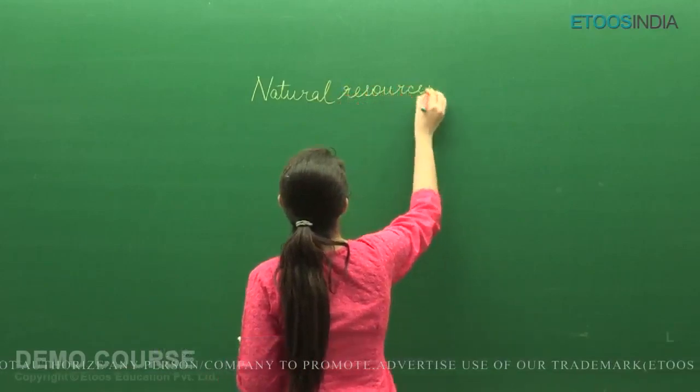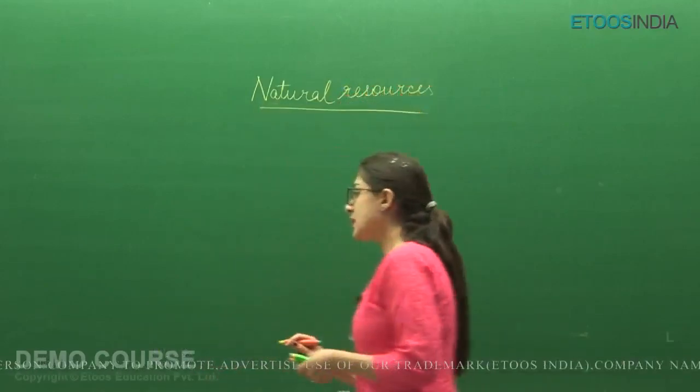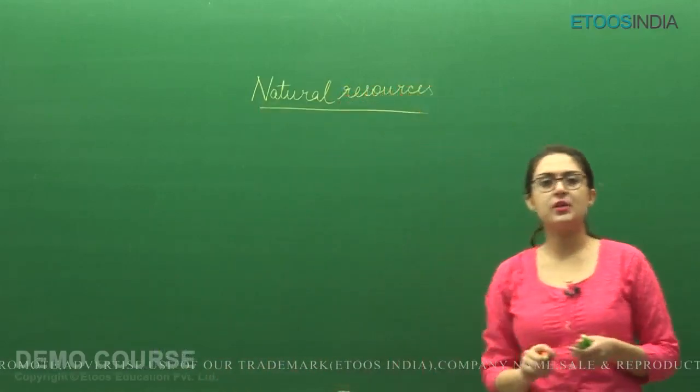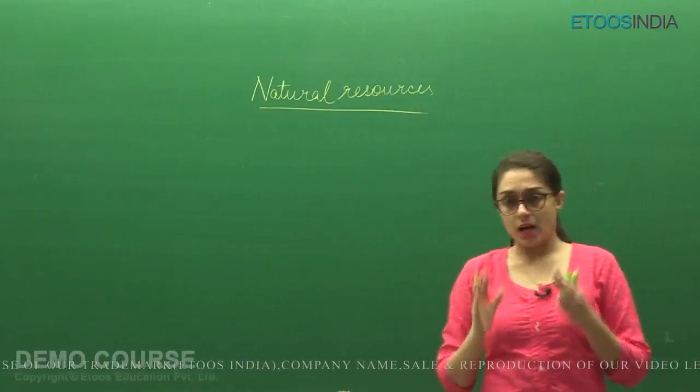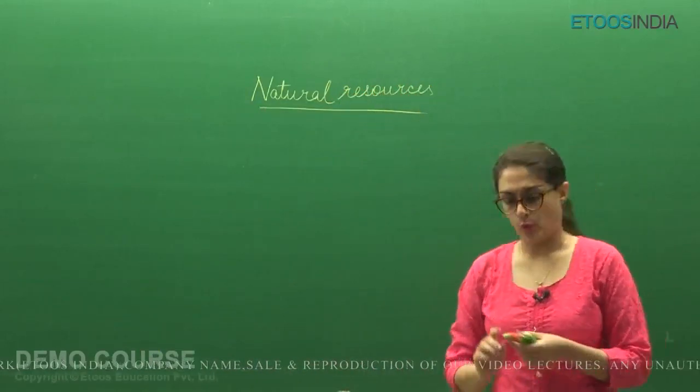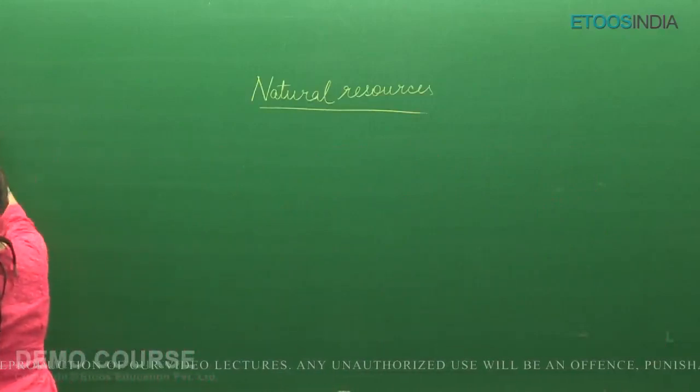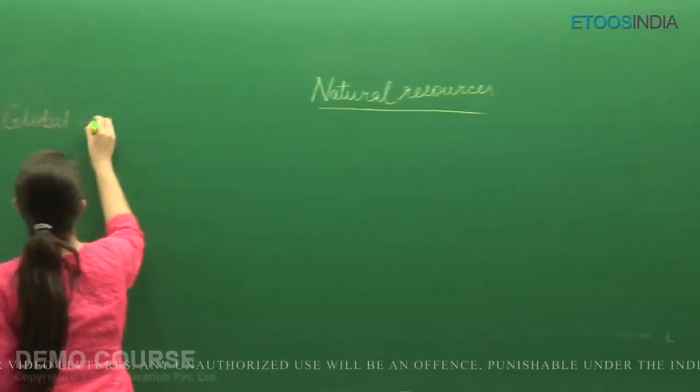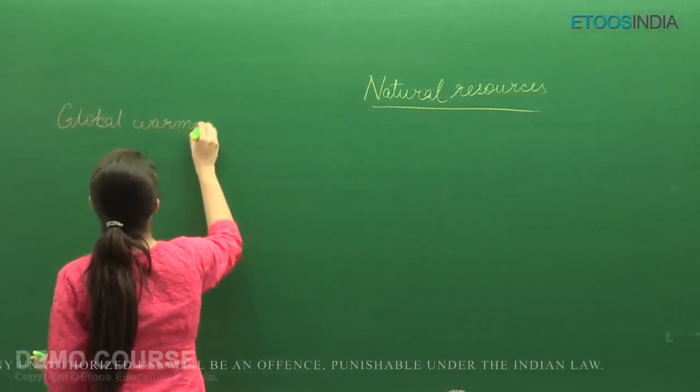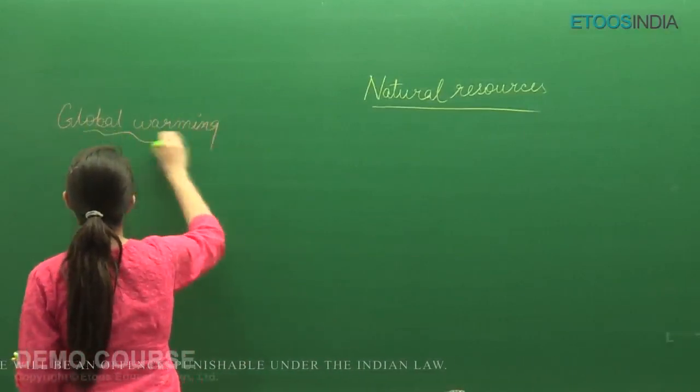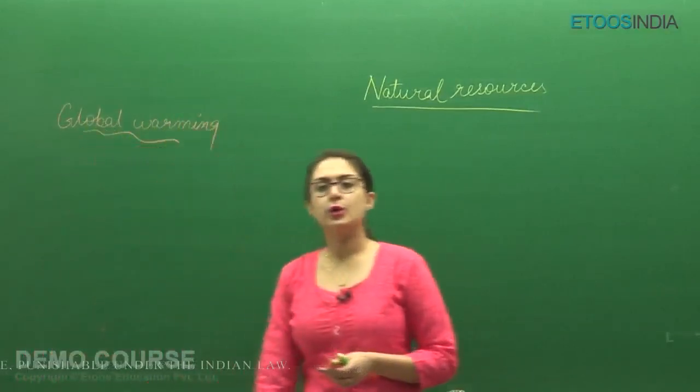What we have completed in last lecture: we have completed greenhouse effect. The effect of greenhouse on our earth is global warming. So we have discussed global warming. Now in greenhouse effect we have discussed its introduction, what do you mean by greenhouse effect, what are the causes and harmful effects.